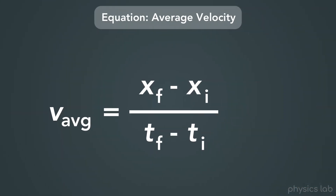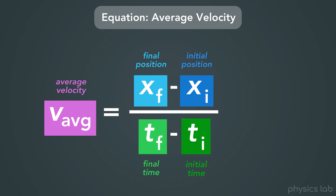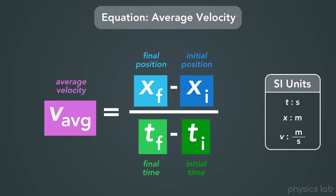Let's take a closer look at this equation. v with the subscript avg stands for average velocity, xf is the final position, xi is the initial position, tf is the final time, and ti is the initial time. Here are the SI units for the variables in this equation: time is in seconds, position is in meters, and velocity is in meters per second.